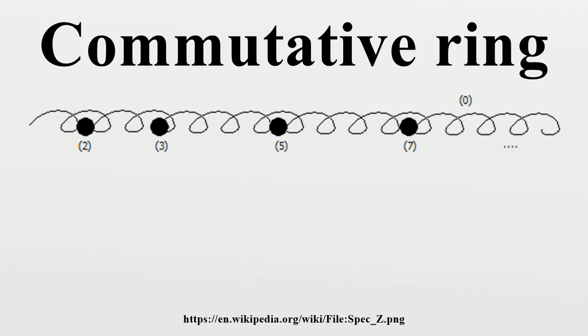A ring is called noetherian if every ascending chain of ideals becomes stationary. Equivalently, any ideal is generated by finitely many elements. A ring is called artinian if every descending chain of ideals becomes stationary eventually. Despite the two conditions appearing symmetric, noetherian rings are much more general than artinian rings. For example, Z is noetherian since every ideal can be generated by one element, but is not artinian. In fact, by the Hopkins-Levitzki theorem, every artinian ring is noetherian. Being noetherian is an extremely important finiteness condition.